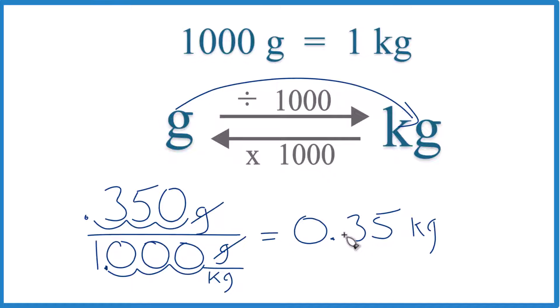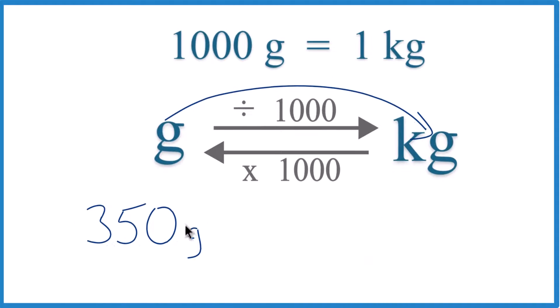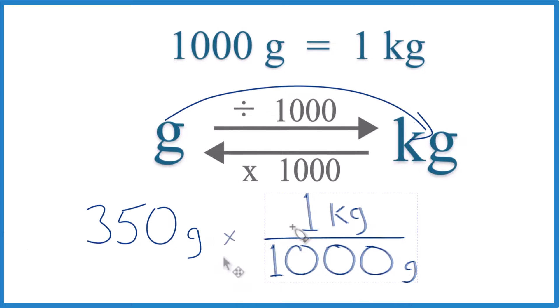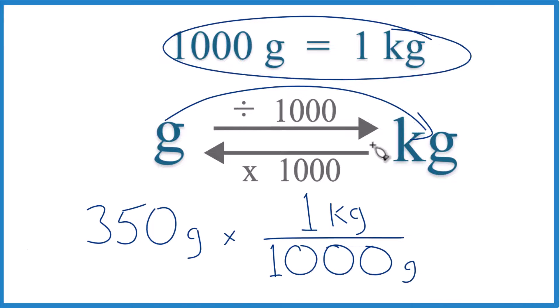If your teacher wants you to multiply by a conversion factor, it's the same thing. Here's how we do it. So we have grams on the top. We need grams on the bottom in our conversion factor. So we're going to multiply by 1 kilogram over 1,000 grams. That's our conversion factor.